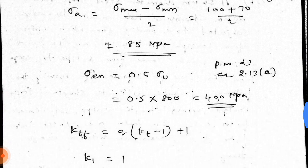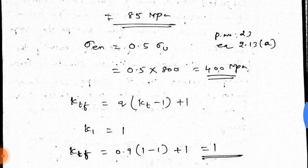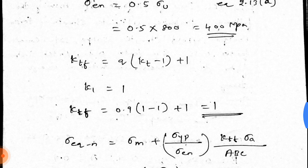Then, endurance stress, sigma en, 0.5 sigma u. Page number 23, equation number 2.13a. Steel is considered. Sigma u value we already have 800, that means sigma en equal to 400 MPa. Then, next is ktf. Ktf equals q into kt minus 1 plus 1. K1 value is 1.